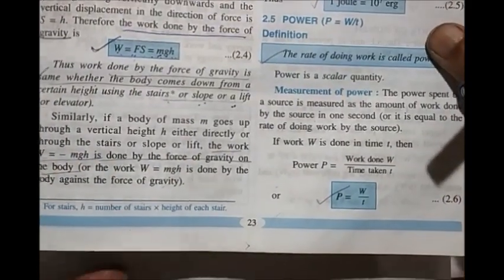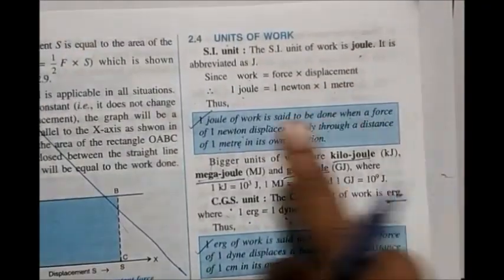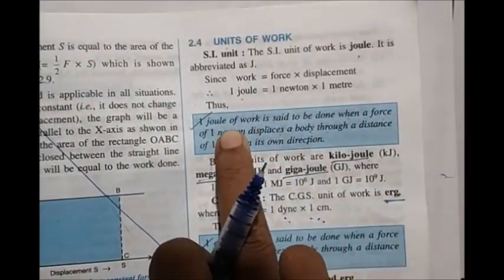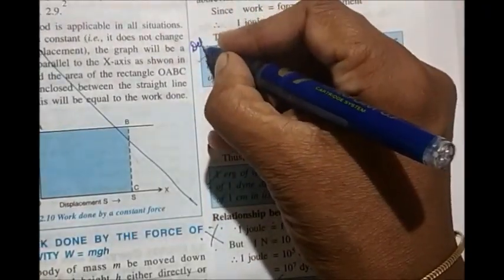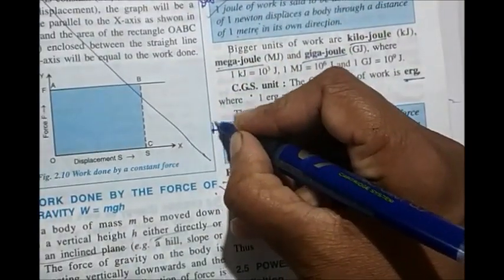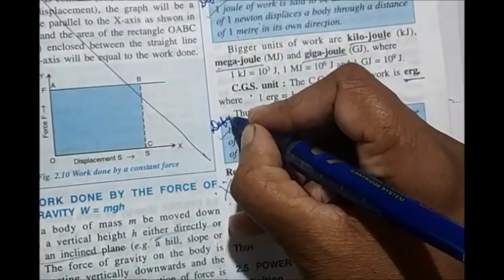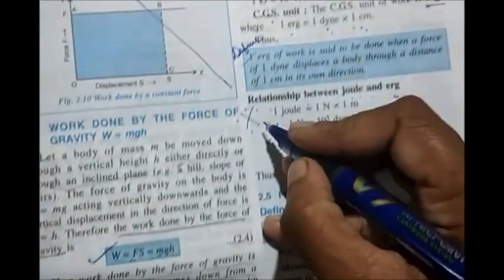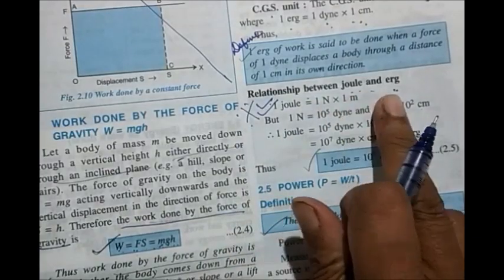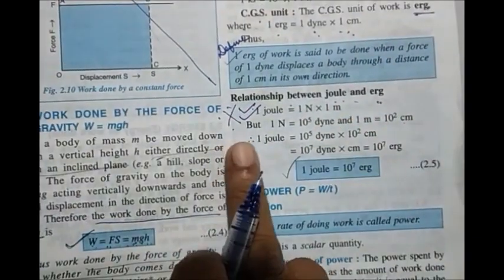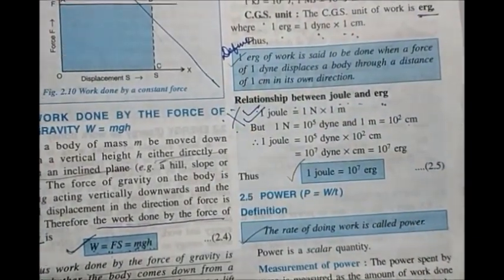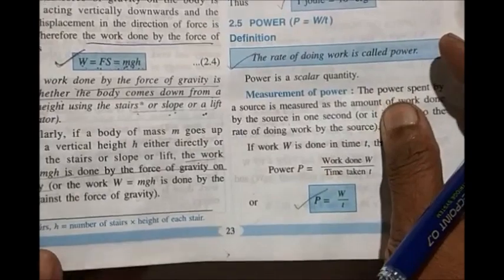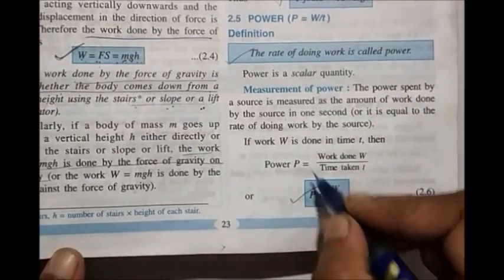Then you have the definition of one joule. Define one joule, then define one erg, and the relationship between joule and erg — this derivation also comes for two marks sometimes. Then come to power: this is the definition of power and the formula for power.